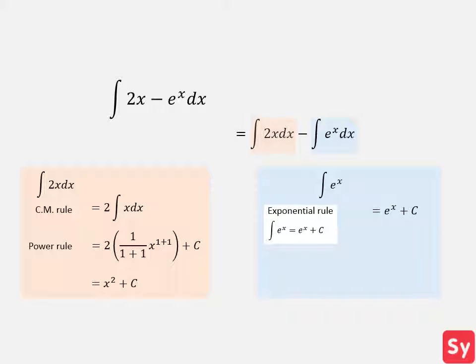Now we'll substitute in our antiderivatives to their integrals and we'll get x squared plus c minus the sum of e to the x plus c. This simplifies to x squared minus e to the x plus c.